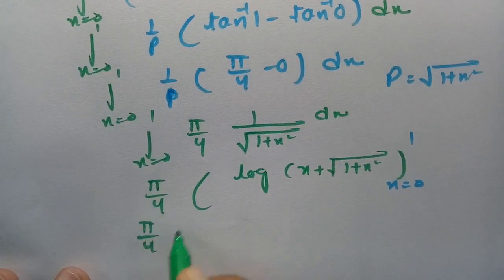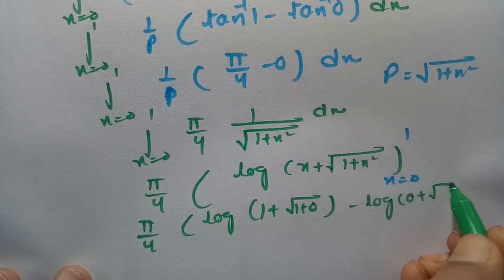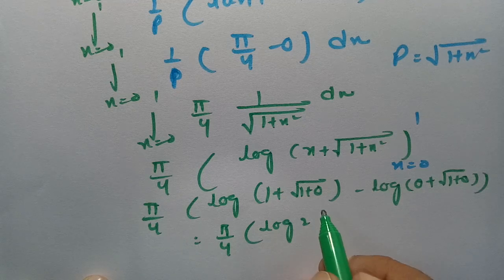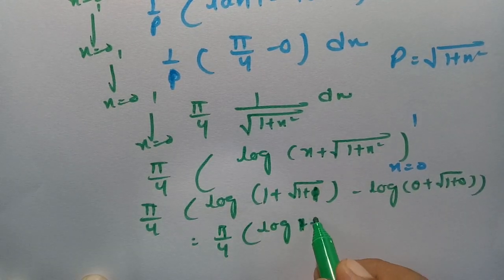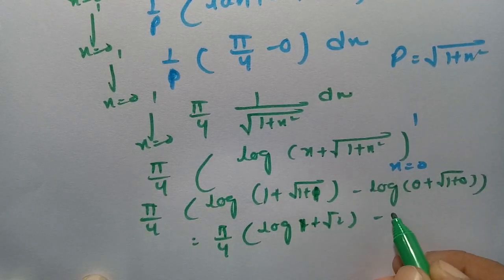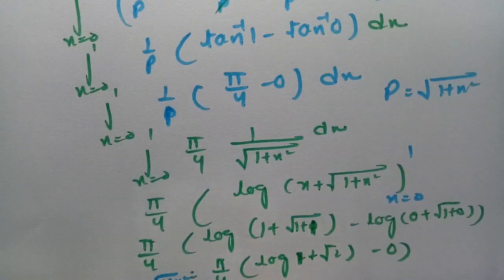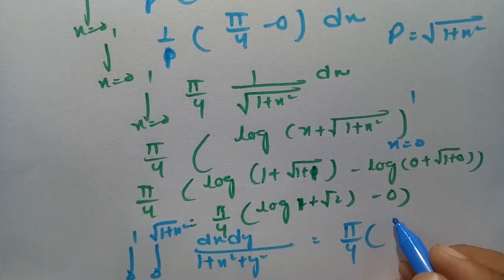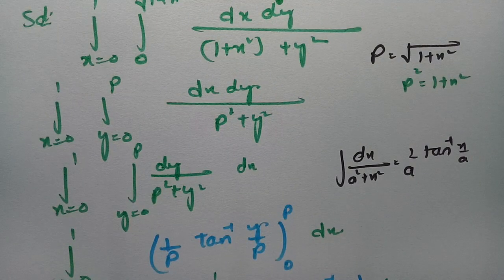Substituting the limits gives pi by 4 times log of 1 plus root over 1 plus 1 squared, minus log of 0 plus root over 1 plus 0. The upper limit gives log of 1 plus root 2, and the lower limit gives log of 1 which is 0. So the final answer is pi by 4 times log of 1 plus root 2. This is the required value. First we integrated with respect to y, then with respect to x, to get the result.